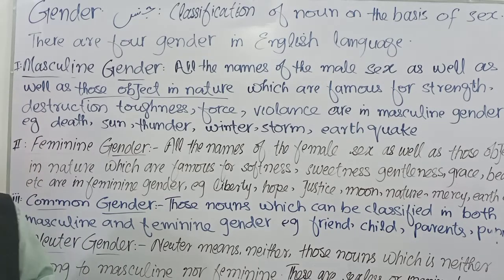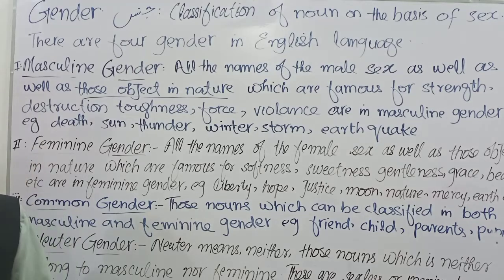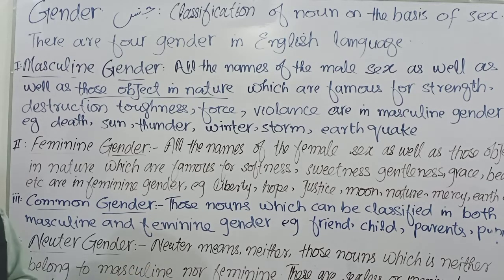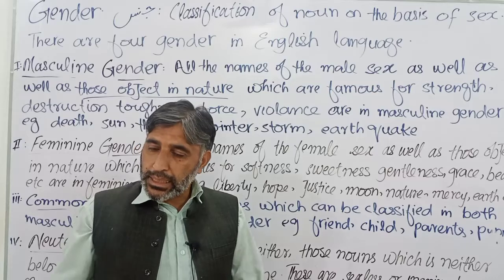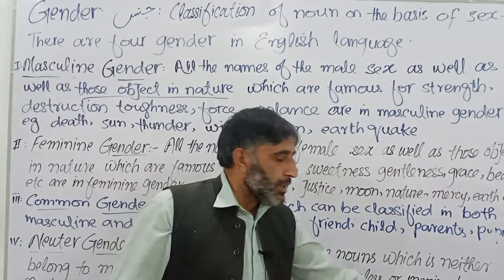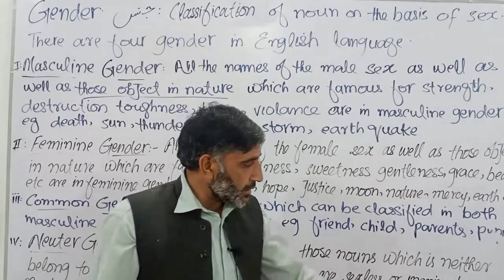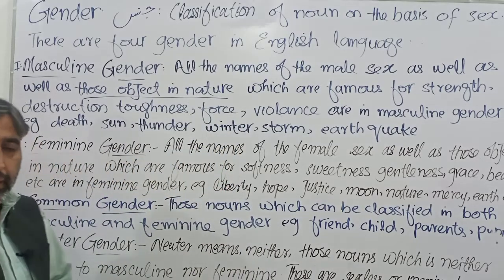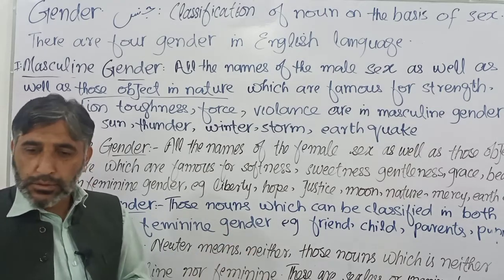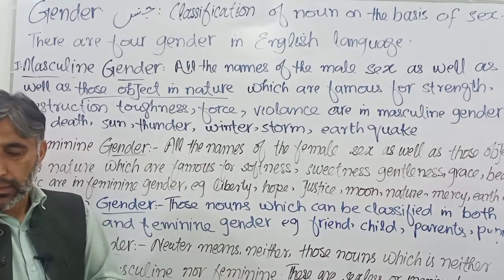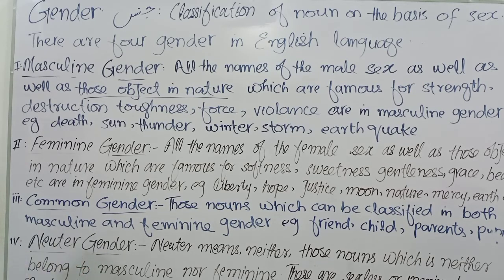And the last gender in English is neuter gender. Neuter means neither — na male hai na female hai. Those nouns which neither belong to masculine nor feminine — jo na muzakkar se ta'alluq rakhte hain na muannas se — are called neuter gender. These are sexless and inanimate nouns — bejaan cheezein jaise book, table, marker, classroom, whiteboard, mobile phone, pen — yeh sab neuter gender hain.